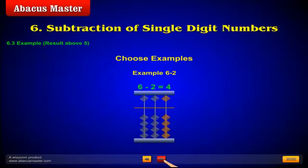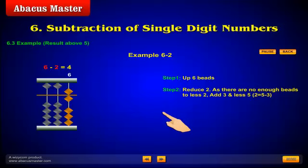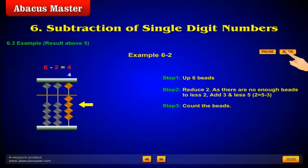Subtraction. 6 minus 2 is 4. Example. 6 minus 2. Step 1. Up 6 beads. Step 2. Reduce 2. As there are not enough beads to less 2, add 3 and less 5. That is, 2 equals 5 minus 3. Step 3. Count the beads.